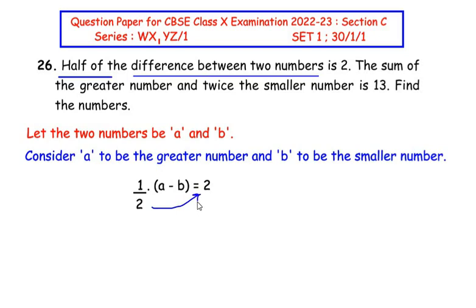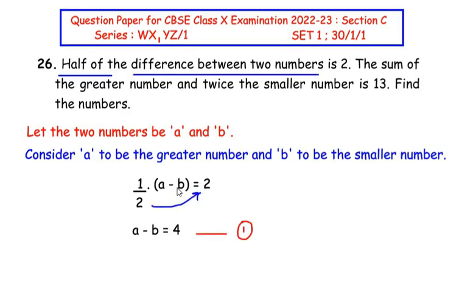We can simplify this by taking the 2 on the other side of the equal sign. This gives us a minus b equals 4. Let us consider that as equation 1.